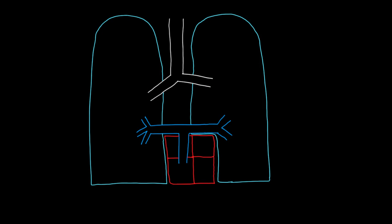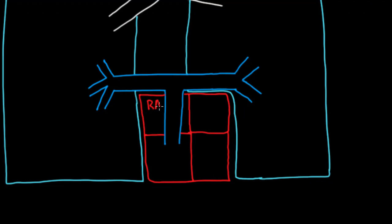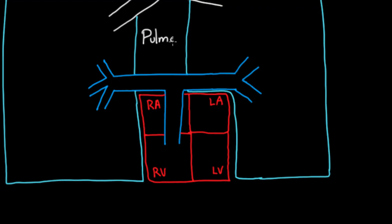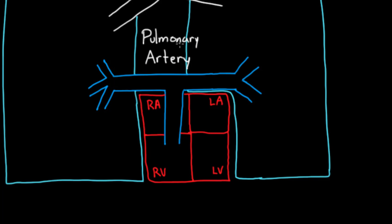Here we have our two lungs and the heart. We've got our right and left lung and the four chambers of the heart. I've taken away a lot of the vessels to focus on the blue blood vessel coming off the heart, which I'm going to label as the pulmonary artery. Remember, arteries go away from the heart — so this is our pulmonary artery, even though it carries deoxygenated blood, which is a little counterintuitive.